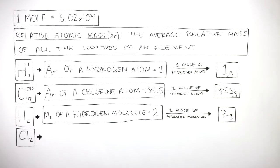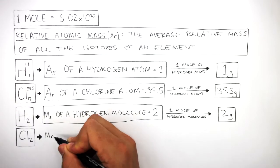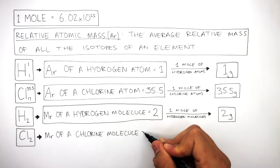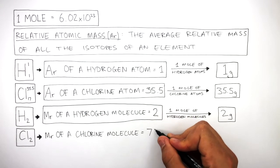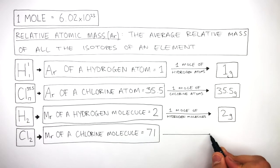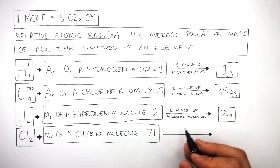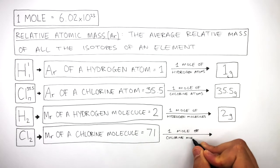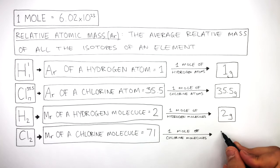Cl2 is a chlorine molecule, and the MR of a chlorine molecule is 71. To convert the MR into grams, one mole of chlorine molecules is 71 grams.